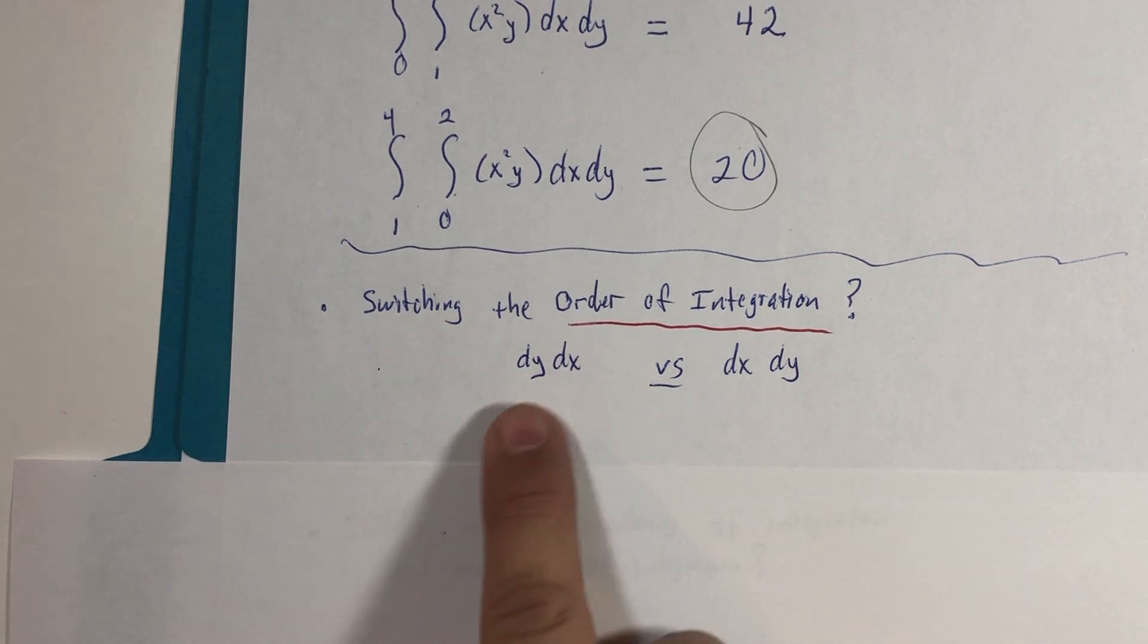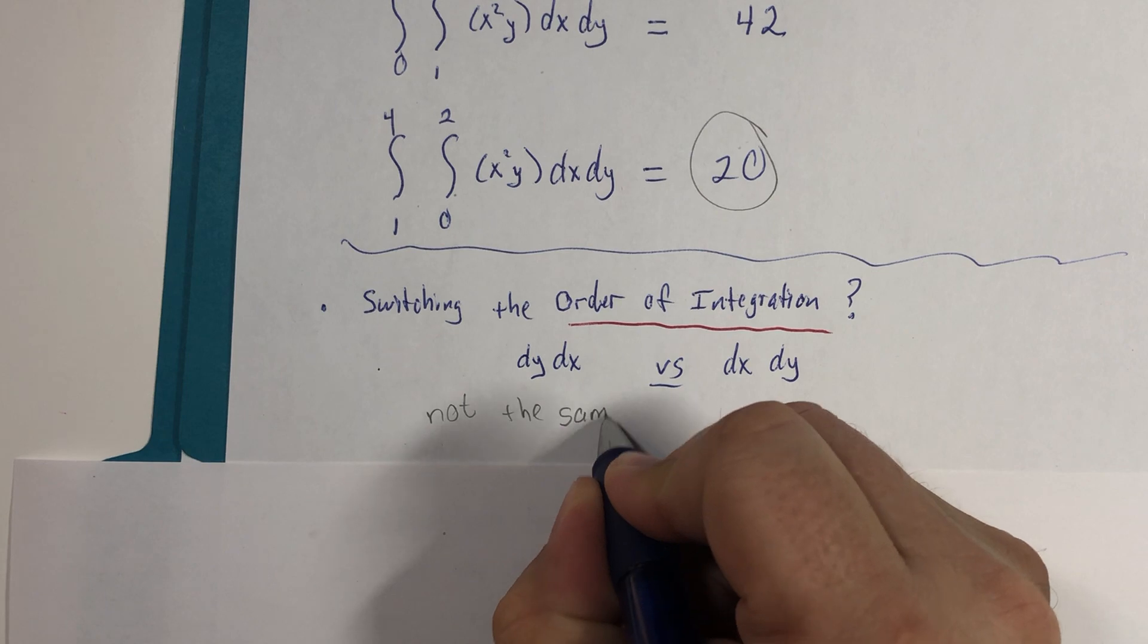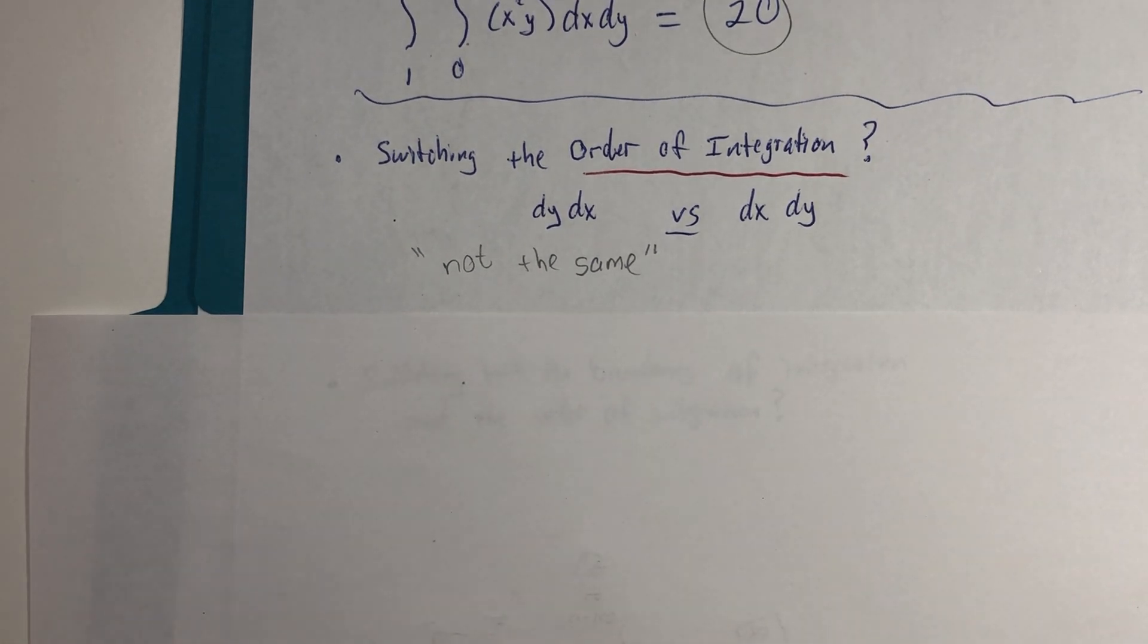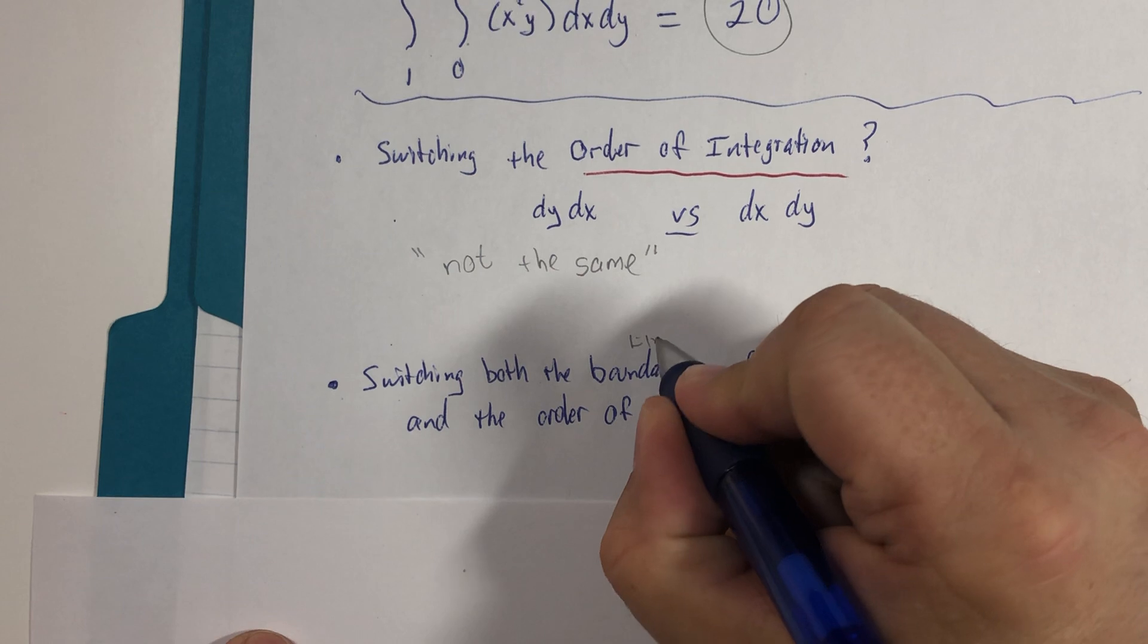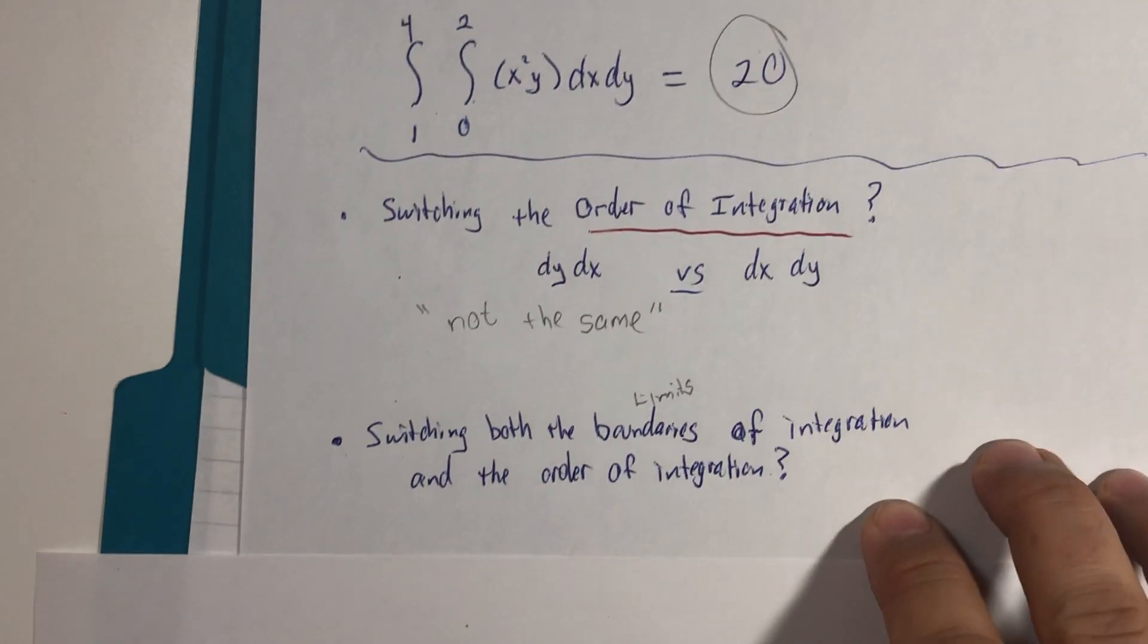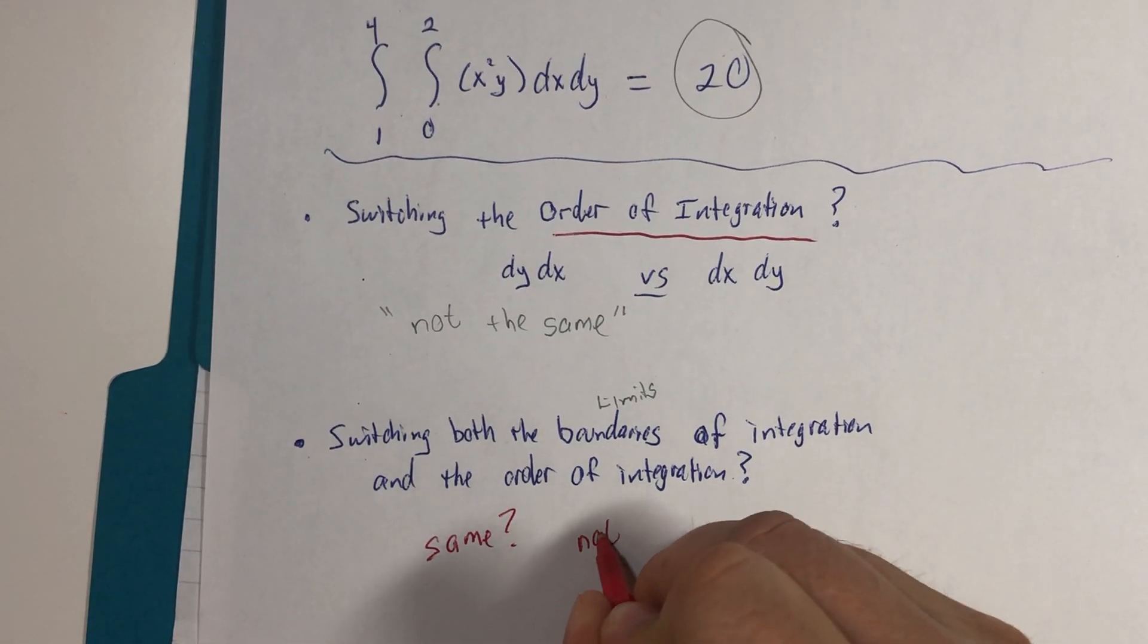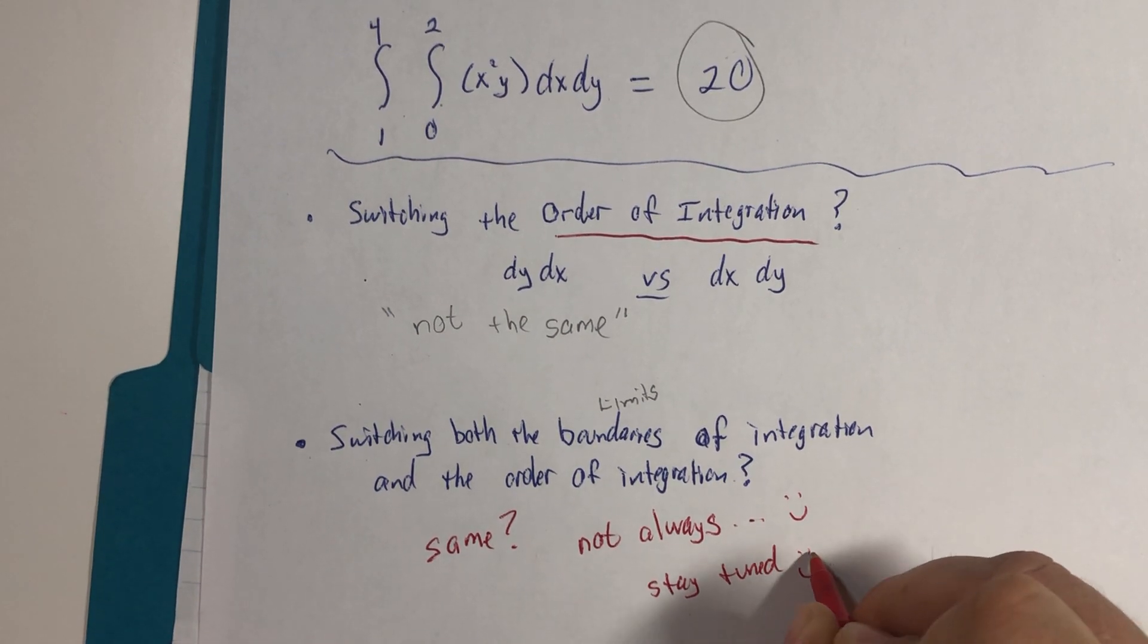If you switch the order of integration only, DY DX versus DX DY, we don't expect it to be the same. There may be exceptions to this. I'm going to just put quotes around this, but you can't just switch those and hope for the same value. Remember, hope is not a strategy. It's good to have, but it's not a strategy in and of itself. If we switch both the limits, all right, the book calls these limits of integration. Remember, integrations come from limits of sums, the limits of integration. And we switch the order of integration. In this example, they were the same, but you're going to find out later. If I ask if these are the same, I'm going to say not always stay tuned. Catch you later.